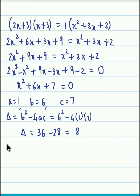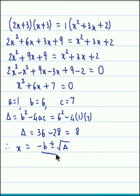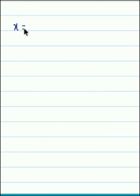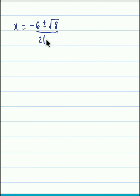Now we obtain x by the formula method: x equals minus b plus or minus root of delta, all divided by 2a. Substituting the values, x is equal to minus 6 plus or minus root of delta — delta was 8 — divided by 2 into 1.